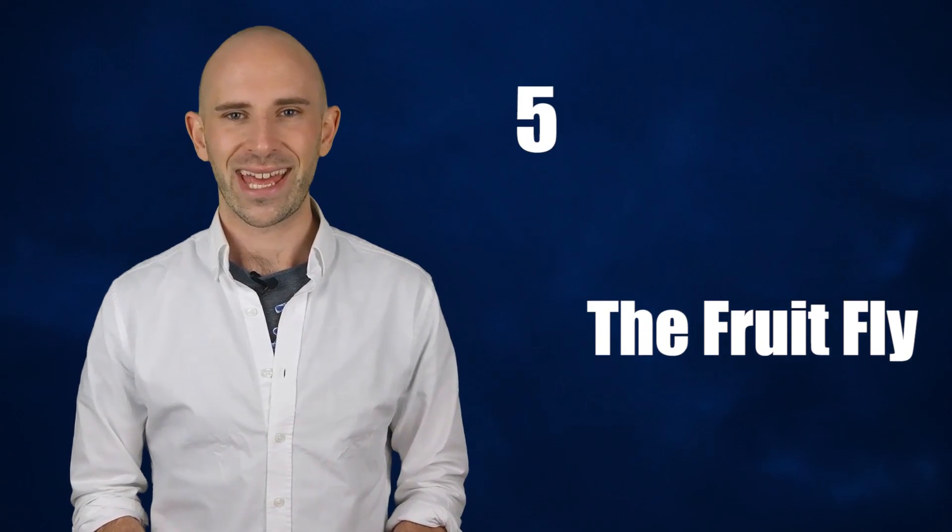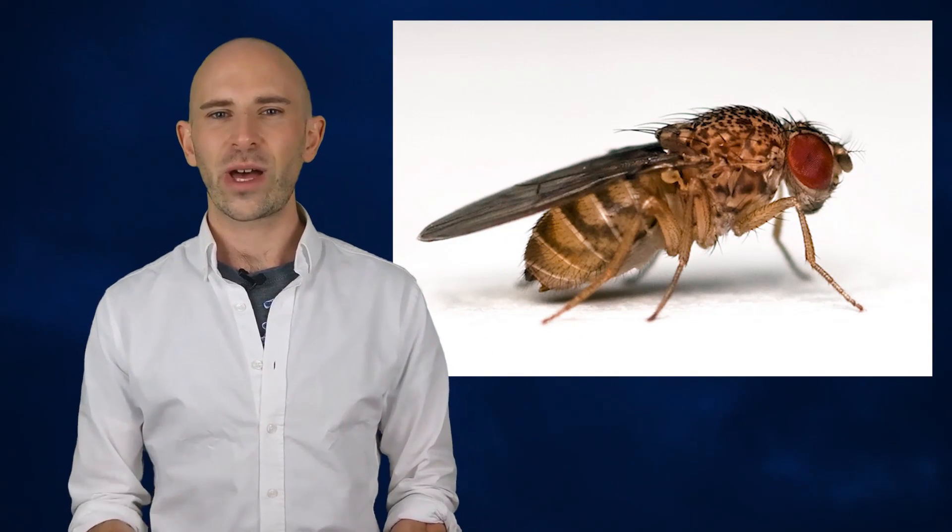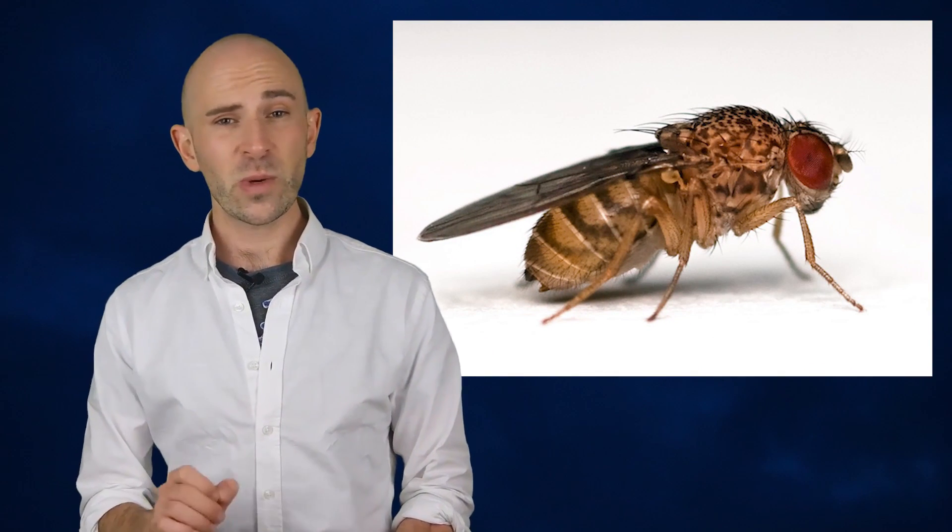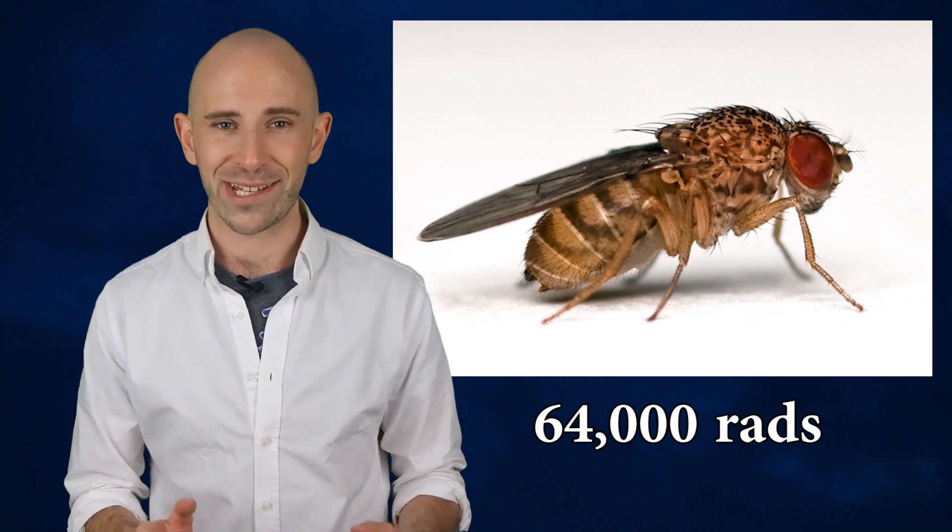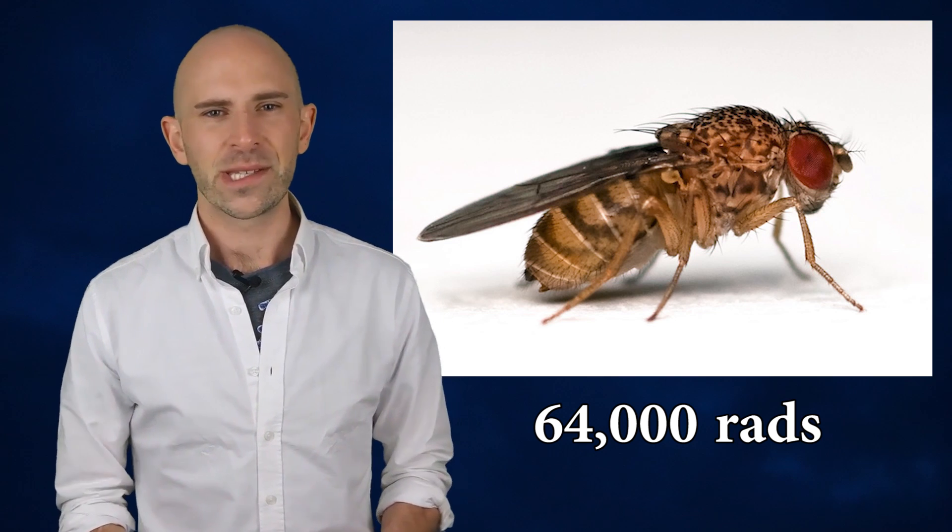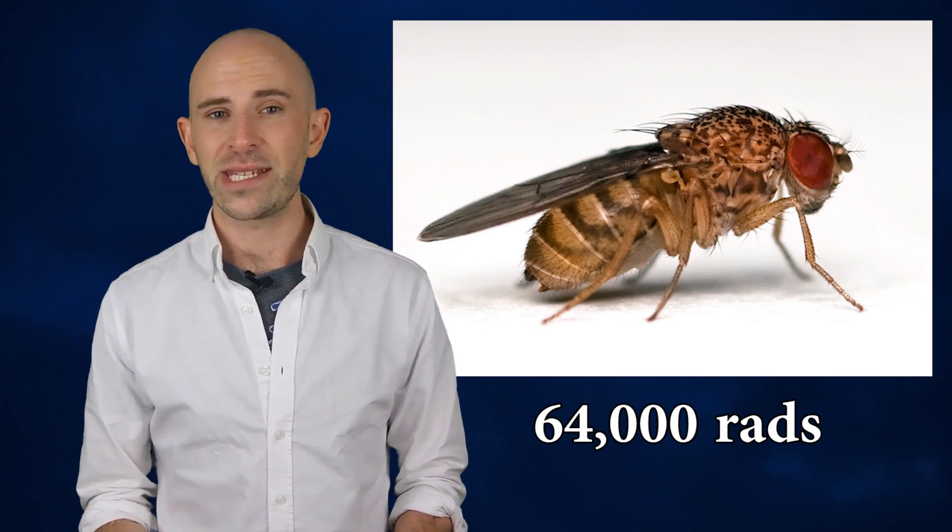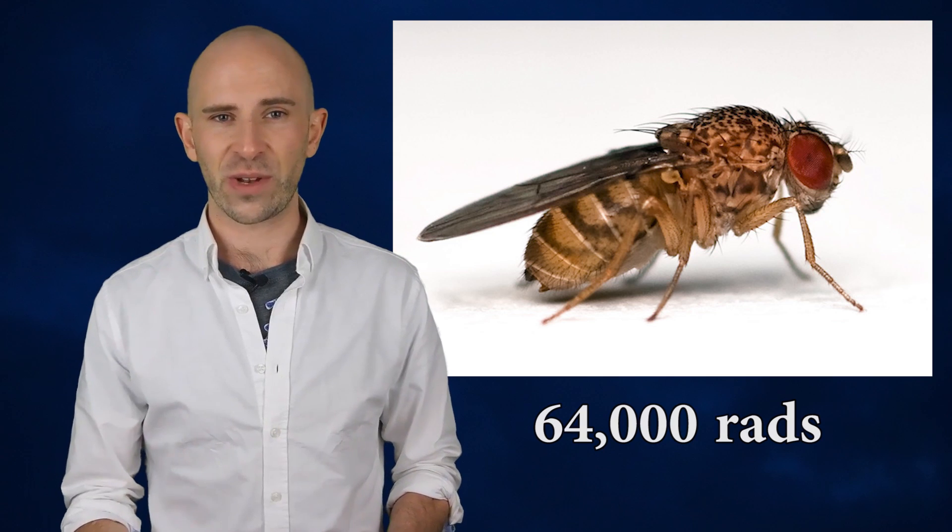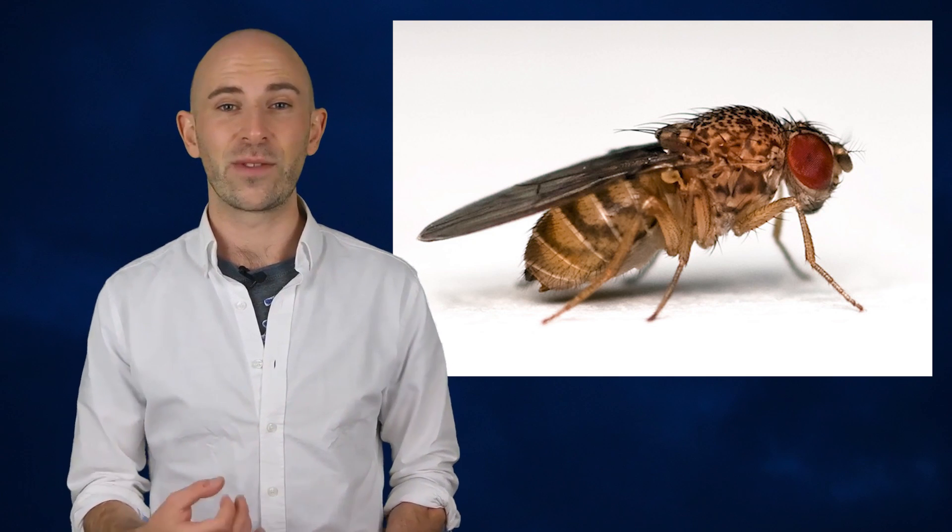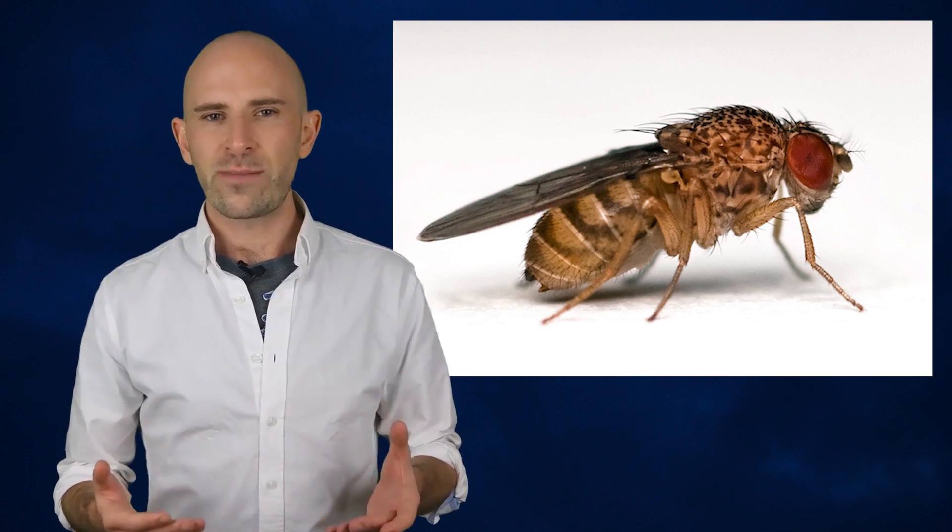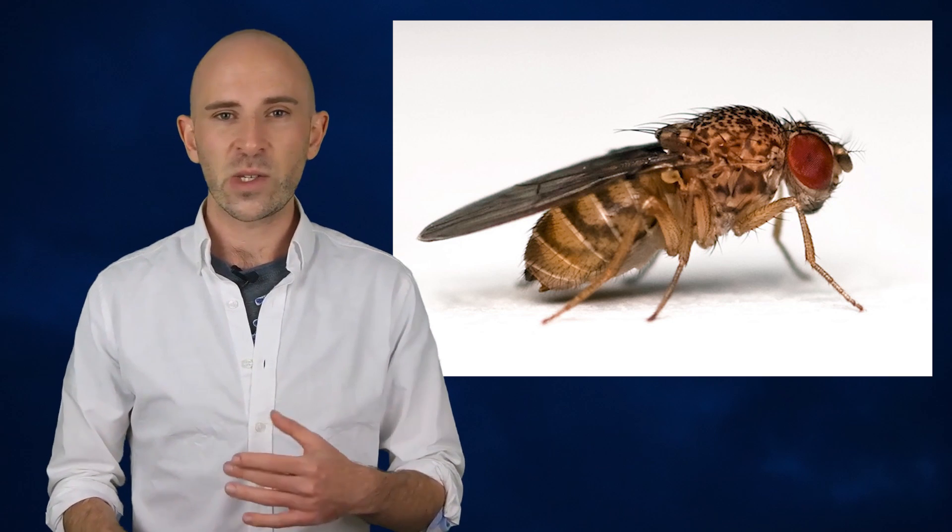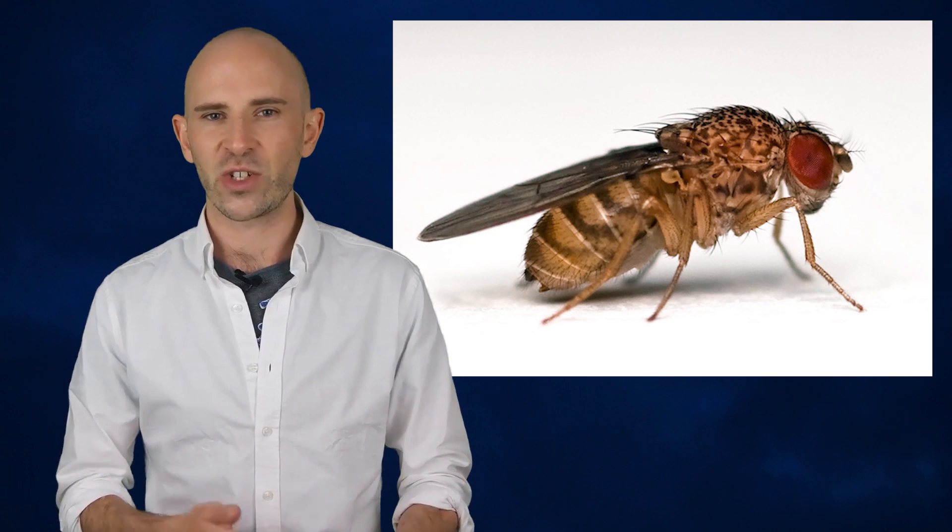5. The Fruit Fly. The common fruit fly can survive high doses of radiation up to around 64,000 rads. Most insects, as it happens, are quite capable of surviving radiation due to slow cell division and extremely fast reproduction in the case of the fruit fly. The ability to reproduce means that they have the ability to evolve very quickly to any change in conditions. Also, the mere fact that they're so small works in their favor too.